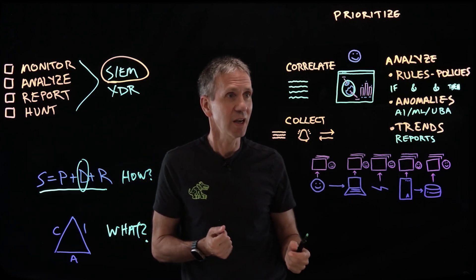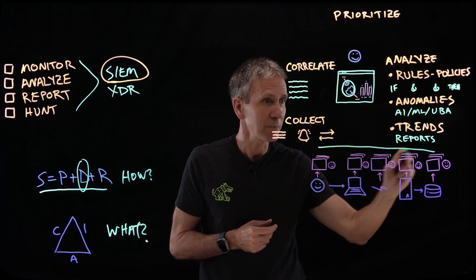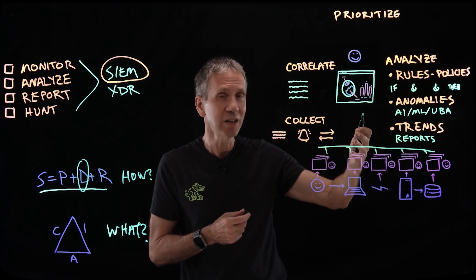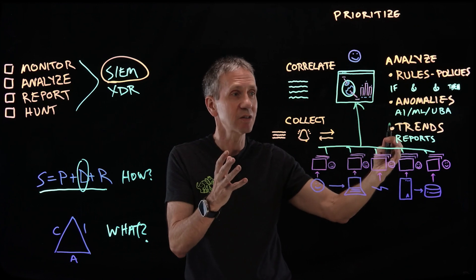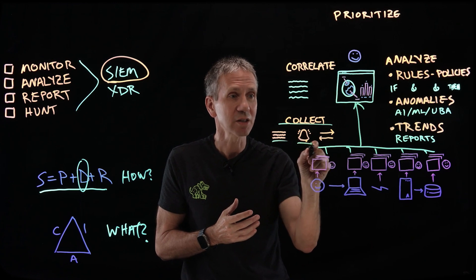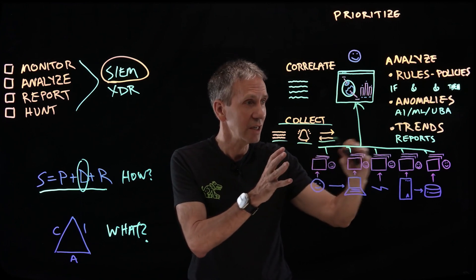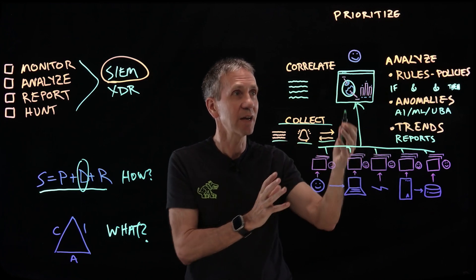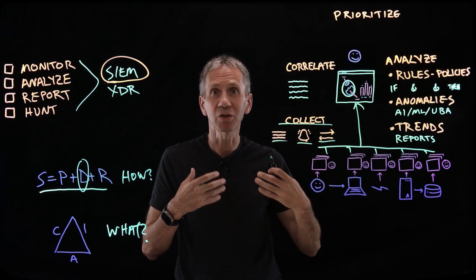Instead of operating all these systems independently, the SIEM adds a layer on top, taking information from all of them and feeding it into a higher-level centralized database. We collect logs, alarms and events, and flow data across the network — each system gives different types of information — and bring it all up to the SIEM. Then we start applying analytics to that big database.